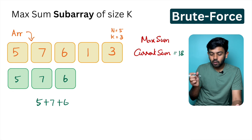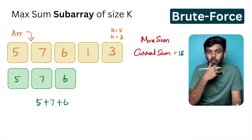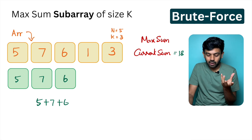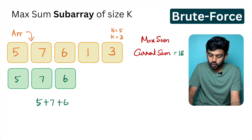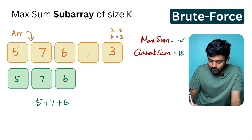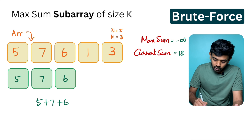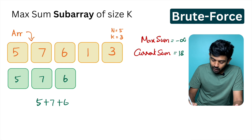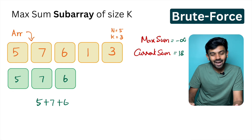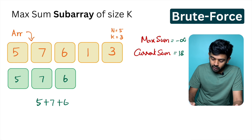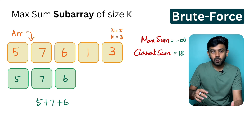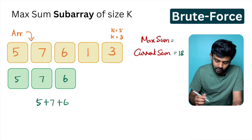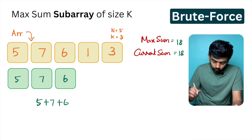By default, we initialize max sum to negative infinity, so that it works even with negative numbers. We compare current sum to max sum. Current sum is 18, max sum is negative infinity. Since current sum is greater, we update max sum to 18.